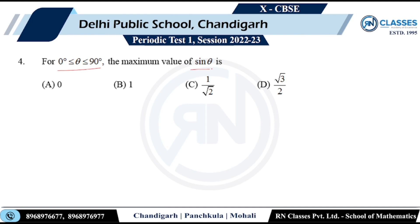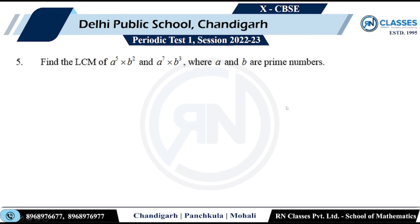Question 4: From 0° to 90°, what is the maximum value of sin θ? Sin θ goes from 0, to 1/2, to √3/2, to 1. So obviously the maximum value is 1. Option P is the correct answer.